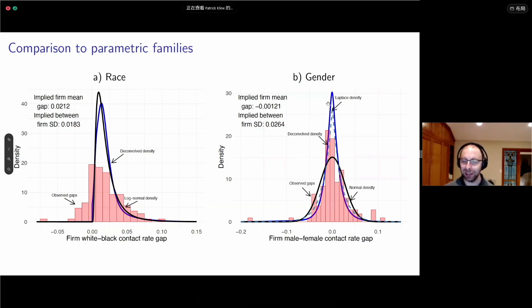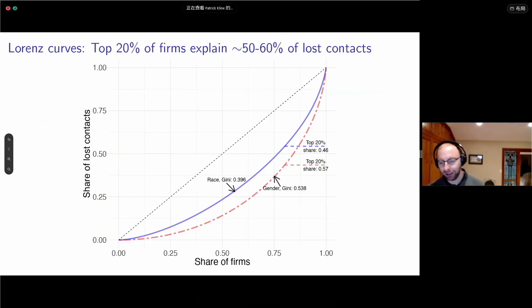We can convert these into CDFs and then use those CDFs to summarize the inequality in discrimination with a Lorenz curve. For race, the top 20 percent most discriminatory companies are responsible for almost half of the lost callbacks. For gender, we use the absolute value and the top 20 percent are responsible for about 60 percent of the lost callbacks on the basis of gender. The Gini coefficient for racial discrimination across companies is about what you would have found for U.S. income inequality level in the 1990s. Whereas gender, it's more like modern Brazilian income inequality.